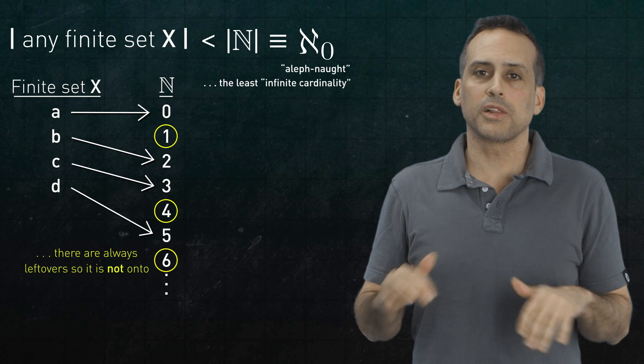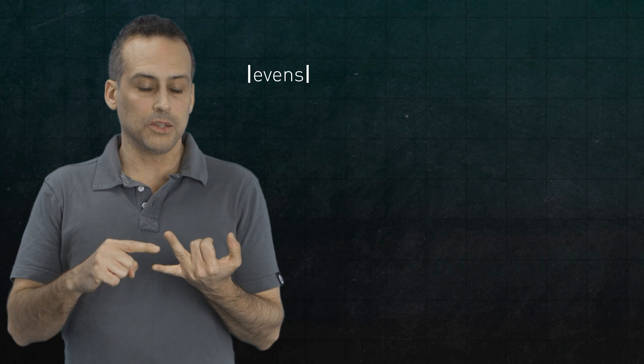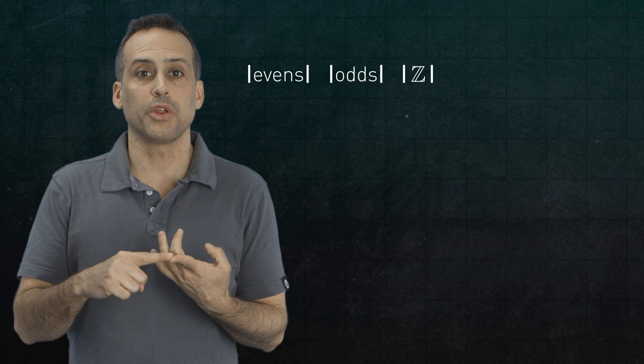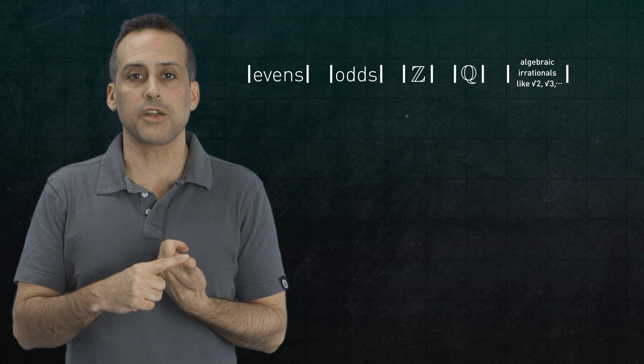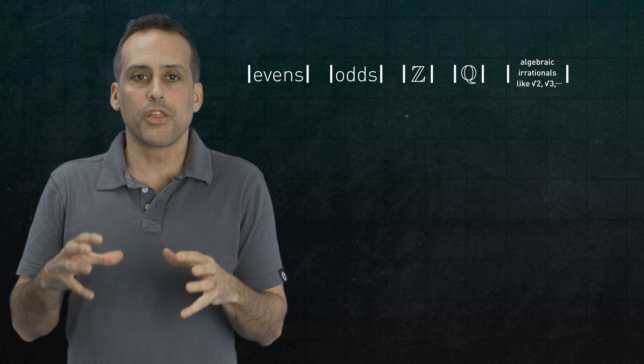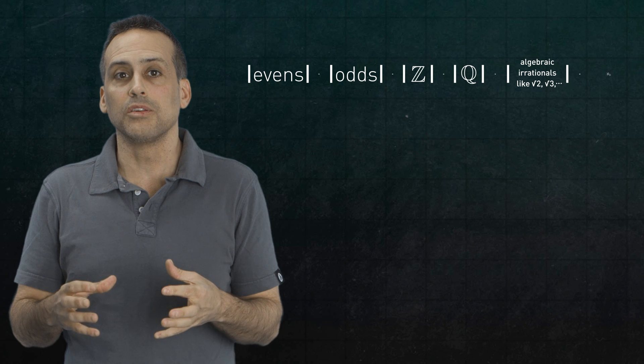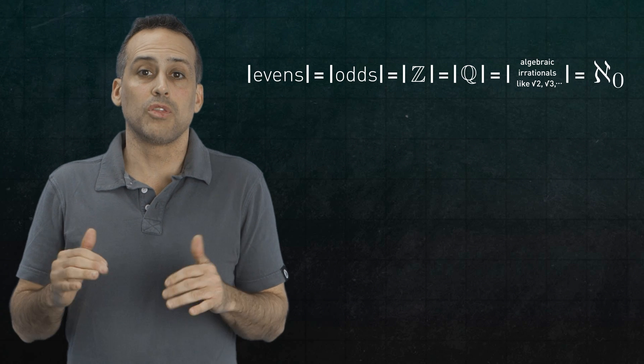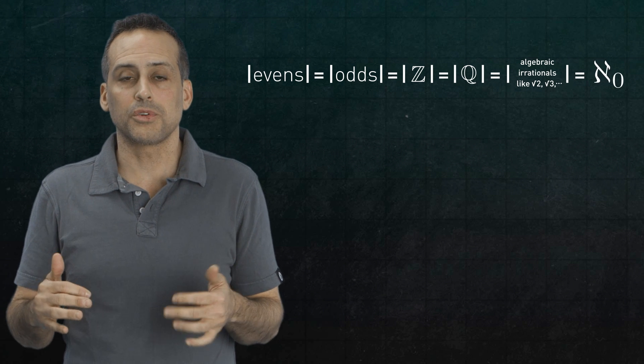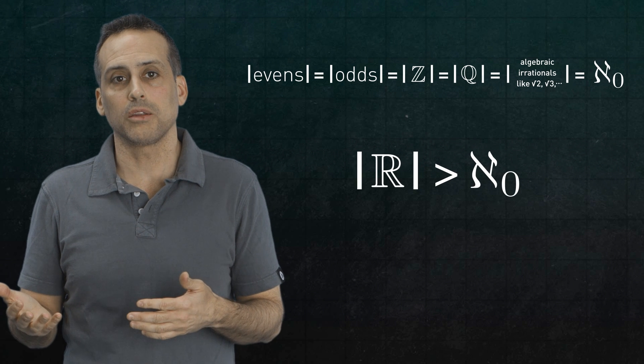There are also clever arguments due to Cantor that have been covered elsewhere on YouTube, showing that the sizes of the even natural numbers, the odds, all the integers, the rational numbers, and even algebraic irrationals like the square root of 2, that all those sets are equal in size to Aleph-Not, even though the cardinality of the real numbers turns out to be greater than Aleph-Not. That's all fun stuff, but I want to focus on something more narrow today.